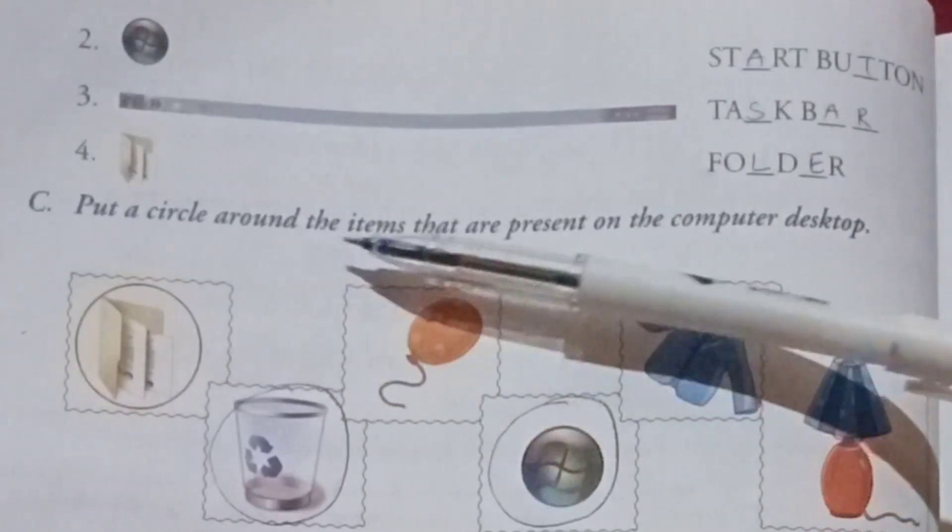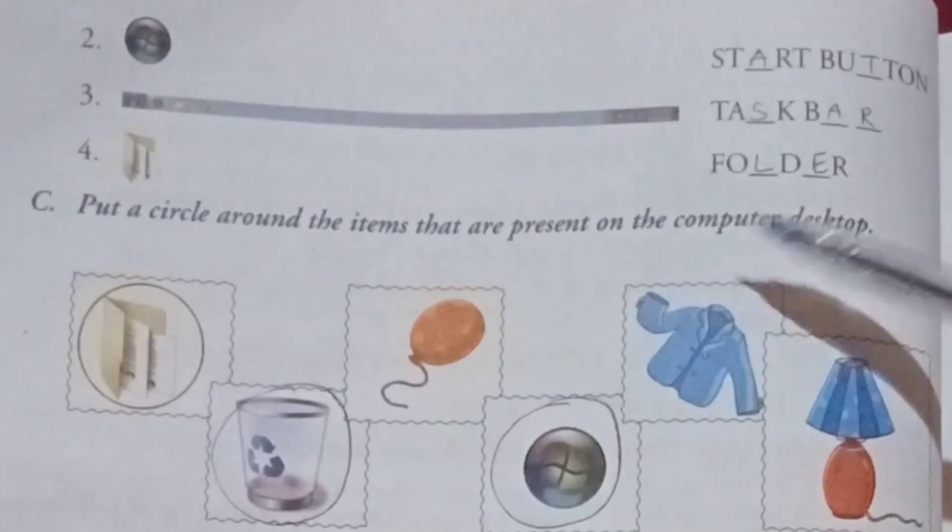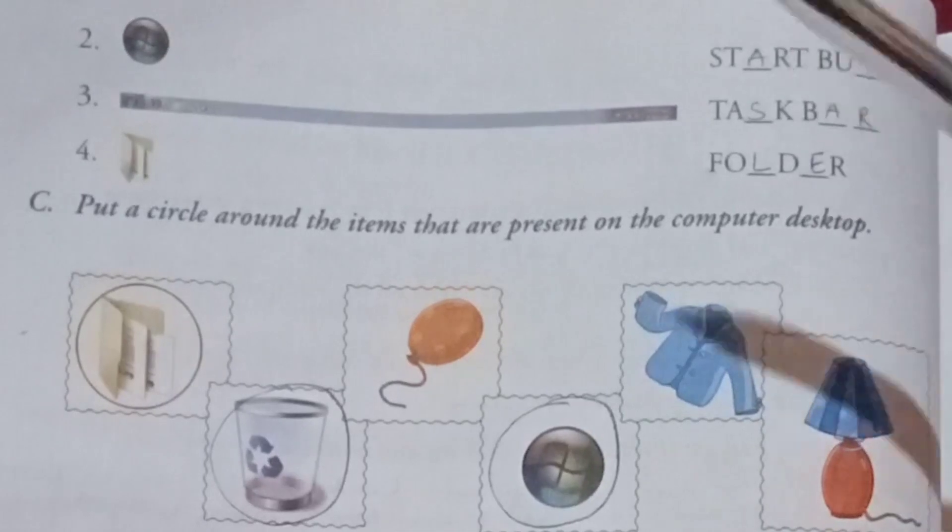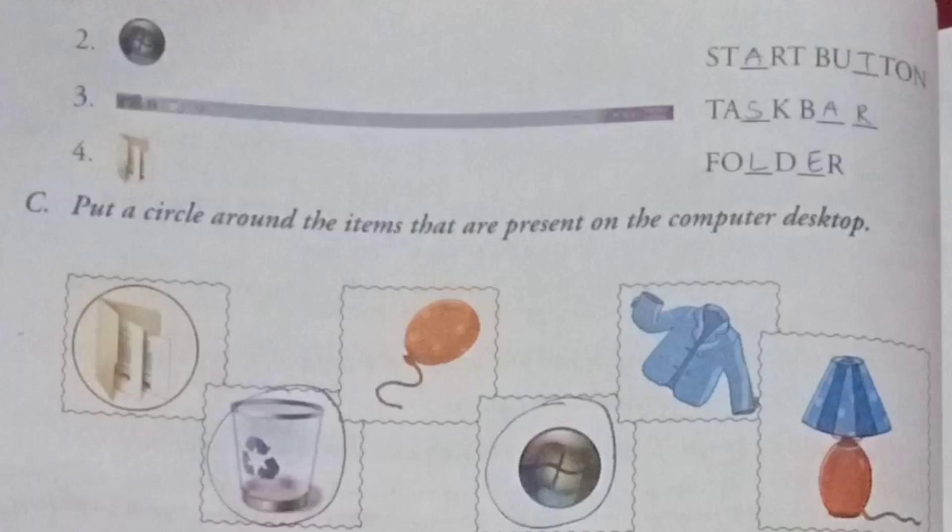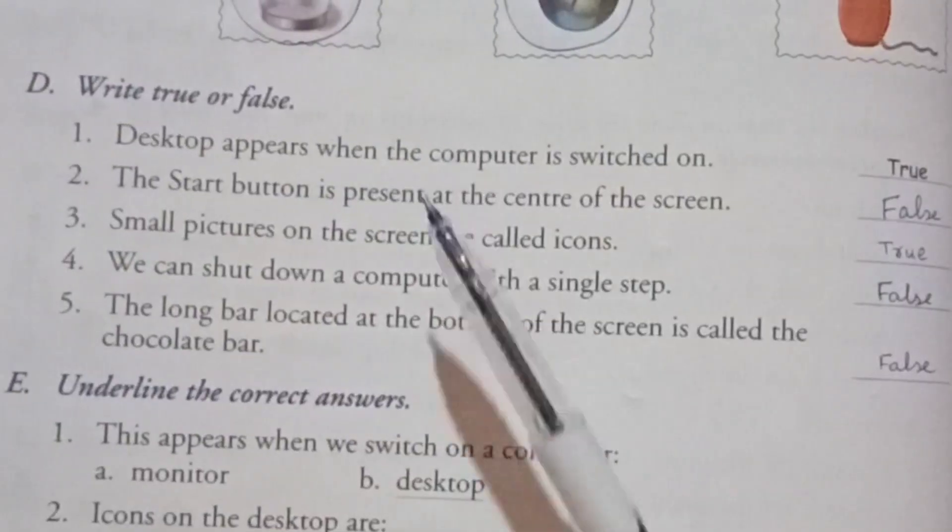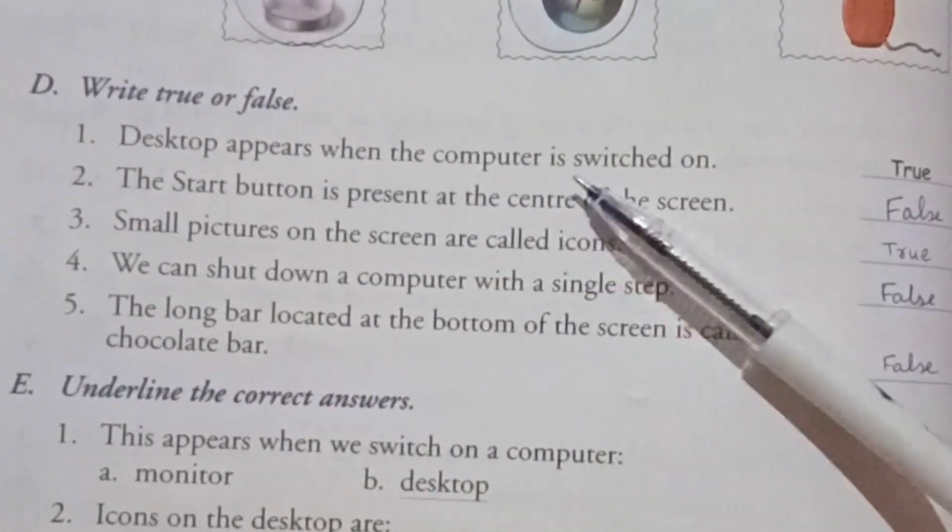Put a circle around the items that are present on the computer desktop. Circle these items. Write true or false: Desktop appears when the computer is switched on. True.